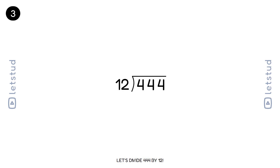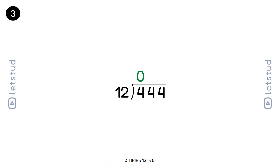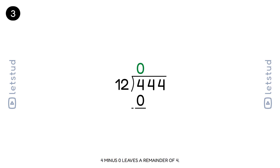Let's divide 444 by 12. We start with the first digit, 4. How many times does 12 fit into 4? 0 times. 0 times 12 is 0. 4 minus 0 leaves a remainder of 4.